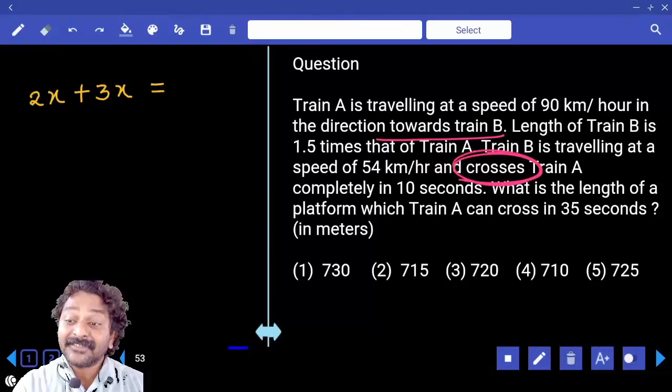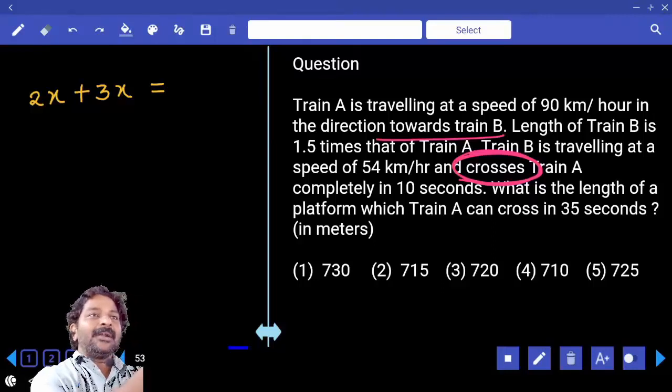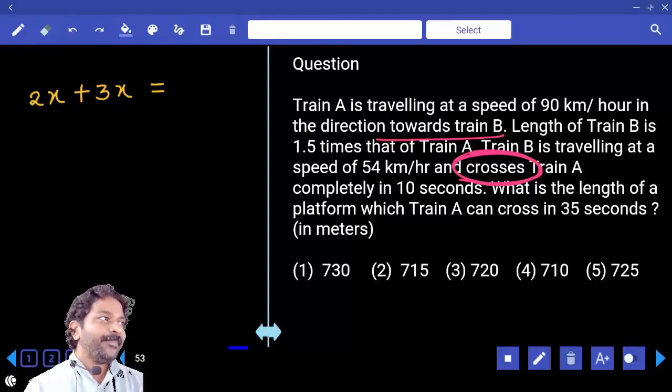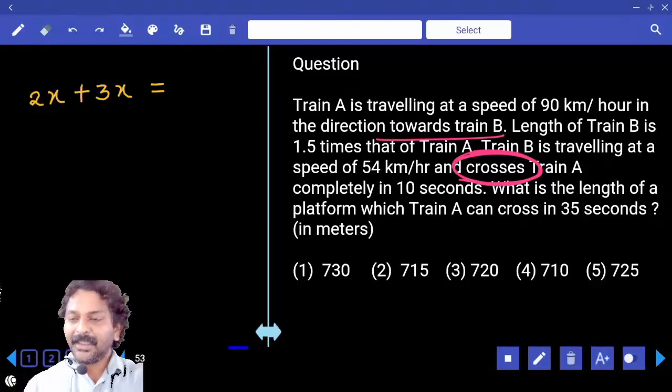Crosses is the word which decides that. Same direction level L is crossing, M is overtaking. Opposite direction is crossing. Crossing comes to picture only when both are moving in opposite direction. If both are moving in the same direction, overtakes comes to picture.